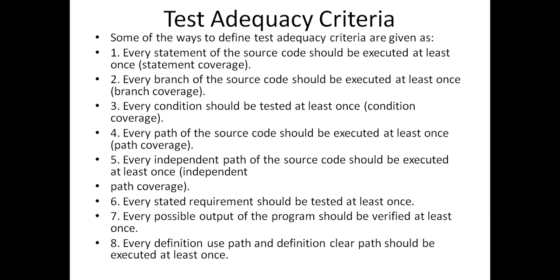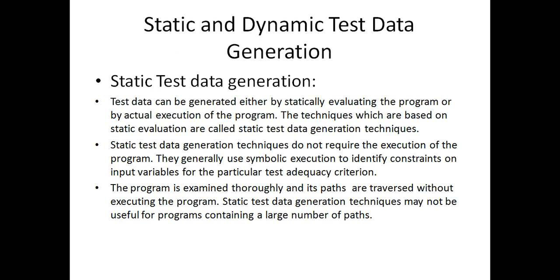One time, we define the two data sources: static and dynamic functions of data generation. First, we will see static data generation. Static data generation means the test data is generated by statically evaluating the program or the actual structure of the program. These techniques do not require the execution of the program. This is totally based on symbolic execution of input variables or a particular test at a specific method. The program is examined fully and its paths are traversed without executing the program. Static data generation techniques may not be useful for programs with complex or many paths.